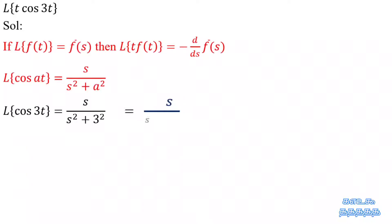Laplace transform of cos 3t is equal to s by s square plus 3 square and simplify it. This is our f dash of s.